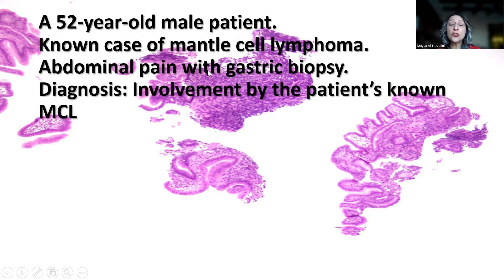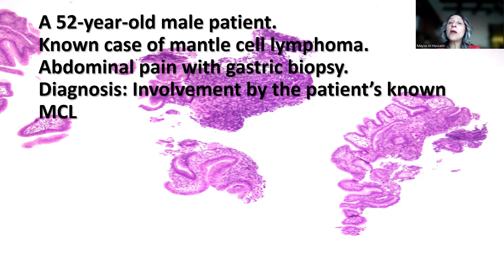Remember that the key tip from today's case is that a crushing artifact in lymphoid aggregates — anywhere in the bone marrow, in the stomach — you have to always be suspicious, especially if the patient is a known case of lymphoma. Then you can apply a selective panel of immunohistochemical stains that would point towards the diagnosis without going into extensive immunohistochemical staining. Remember that mantle cell lymphoma has a propensity to involve the GI tract — usually the colon in the form of polyps, but sometimes also the stomach.